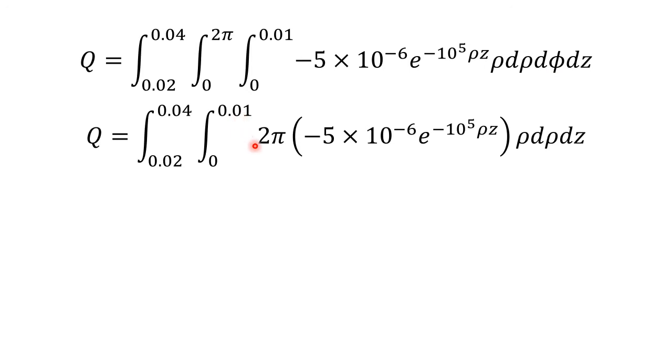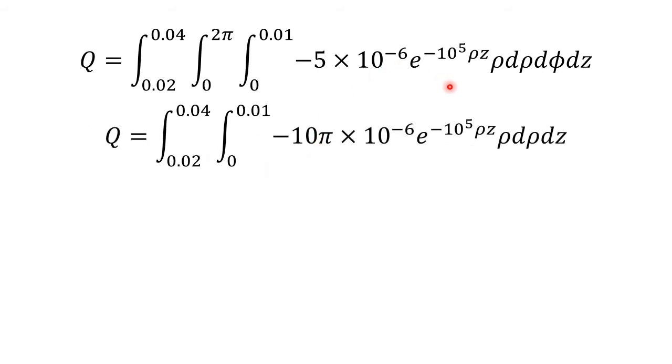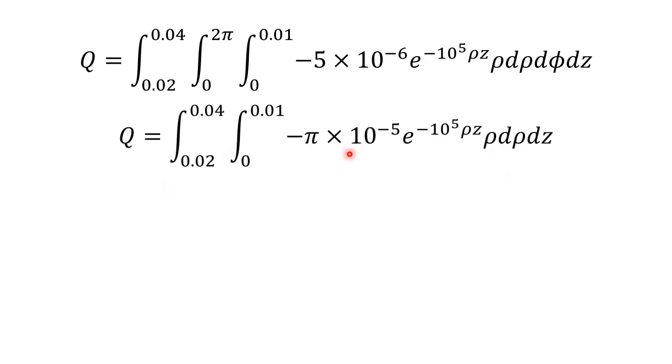So the value of 2π is multiplying to what remains in the triple integration. The integral with respect to dφ from 0 to 2π is gone because it has been evaluated and simplified, and the value is now multiplied. This value when simplified further: 2π times -5 is -10π × 10⁻⁶, and simplifying further we have -π × 10⁻⁵ e⁻¹⁰⁵ρz ρ dρ dz.